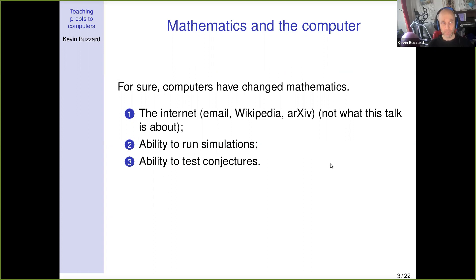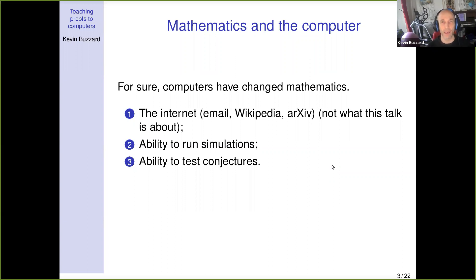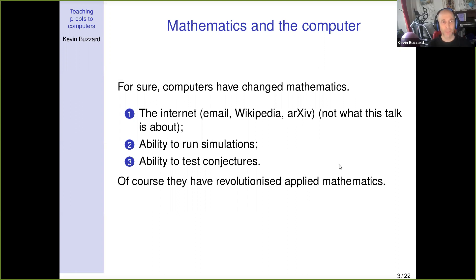Computers give us the ability to test conjectures. The Goldbach conjecture — that every even number is the sum of two primes — now has substantial computational evidence. In fact, it's now a theorem that every odd number at least seven is the sum of three primes, and the computer was an integral part. The proof used the circle method to handle numbers bigger than about 10^30, then checked everything smaller by computer.